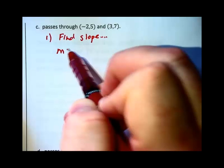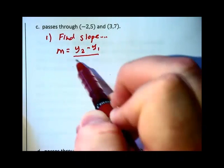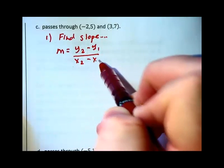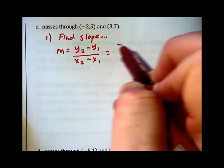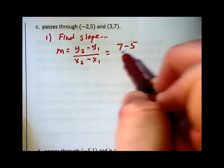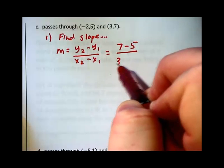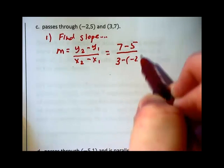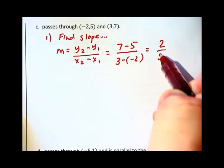And we're going to use our slope formula, which is the difference of the y's divided by the difference of the x's. And we will get 2nd y minus 1st y, 7 minus 5, divided by 2nd x minus 1st x, 3 minus a negative 2. And that will give us 2 fifths as the slope.